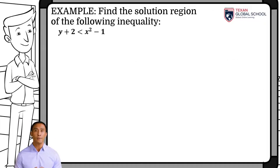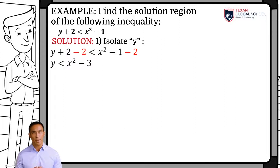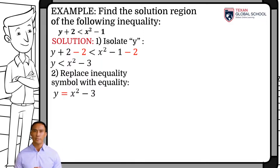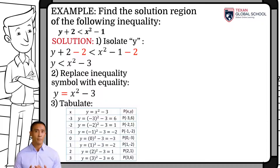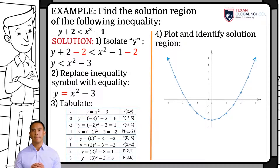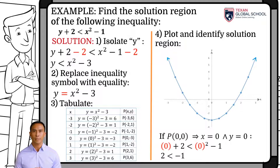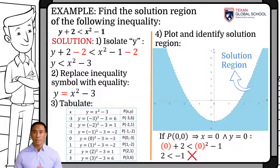In this last example, we will follow the same process to obtain the solution region of this inequality with two variables. We isolate y using the additive property to cancel the 2. Then, we substitute the inequality symbol for the equality symbol to tabulate. Since it is quadratic, a parabola should be plotted. We propose values from negative 3 to 3 to obtain the graph's points in the plane. We can see that a parabola divides the plane into two regions. We choose the origin of coordinates, where x equals 0 and y equals 0. We substitute in the original inequality; results that the inequality is false, since 2 is not less than negative 1, meaning that the solution region is the one below. Since the sign of inequality is open — that is, less than — the points of the parabola do not belong to the solution region, and therefore are drawn dotted.